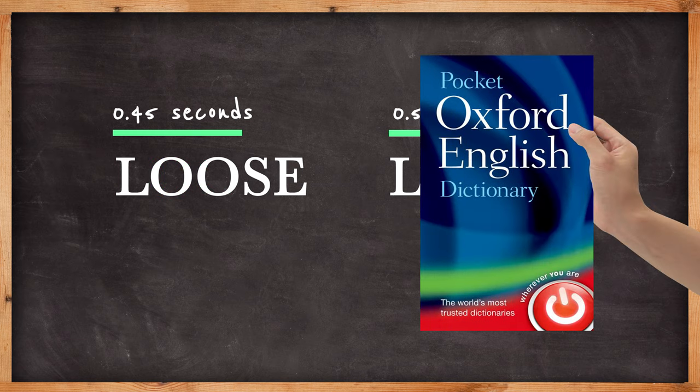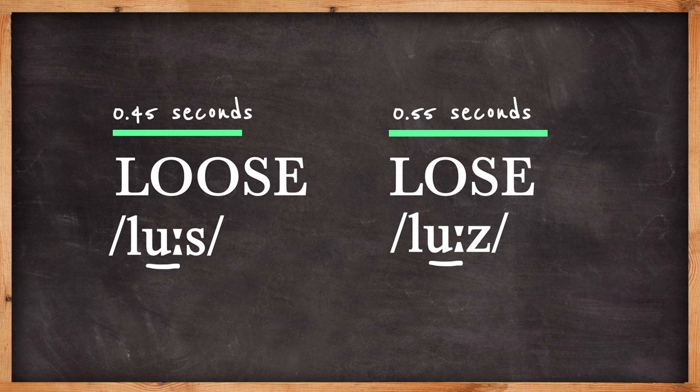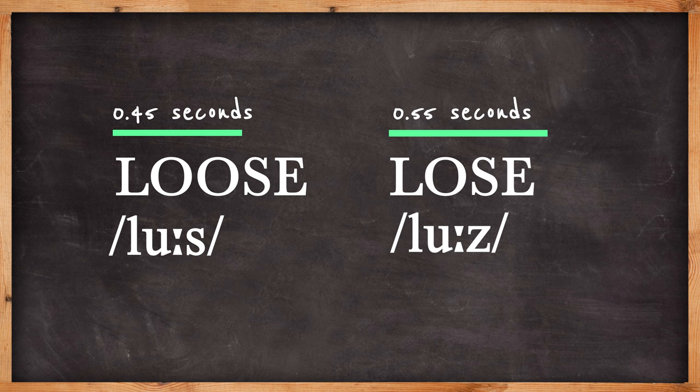Now if we look them up in a dictionary, they appear to be the same length, with a long OO in both. So why is loose shorter than lose when we actually say it? The answer lies in the consonant sounds at the end.